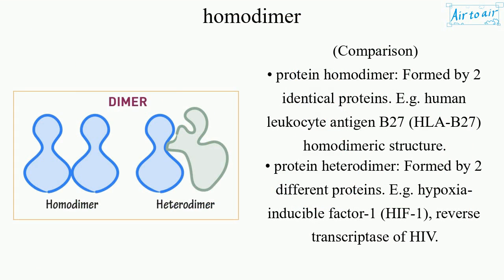Comparison — Protein HOMODIMER: formed by two identical proteins, e.g., human leukocyte antigen B27 (HLA-B27), homodimeric structure.